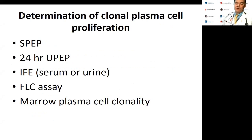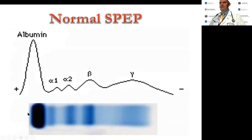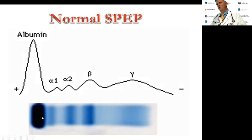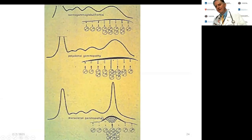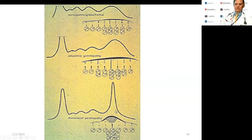To prove clonal plasma cell proliferation, you need SPEP, 24-hour UPEP, IFE, free light chain assay, and plasma cell clonality on marrow. A serum protein electrophoresis separates proteins by charge on an electrophoretic gel. Normally there's a polyclonal spread; in a monoclonal plasma cell proliferation, all the cells produce one pure protein that migrates at one level, giving a narrow peak called an M-spike or church spire. The problem with SPEPs is they're only accurate down to about 0.5 g/dL, and light chains migrate very fast on gel so you can miss them.